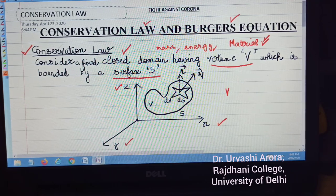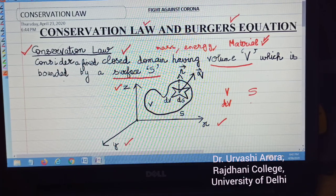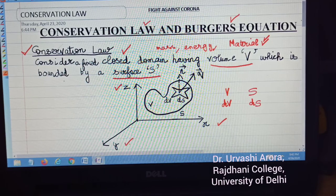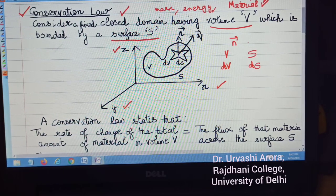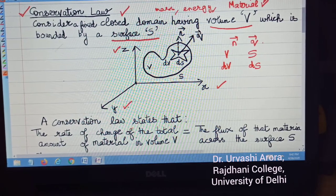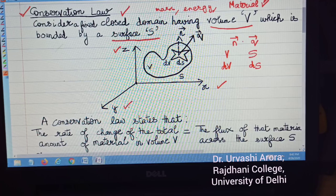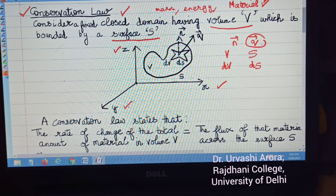In that volume V bounded by surface area S, we take an infinitesimal small volume dV, and suppose dS is the corresponding surface area. Here, the vector N is the outward drawn unit normal on the surface area S, and the vector Q is the flux vector, where flux is the volume of the material flowing through the surface area S per unit time.